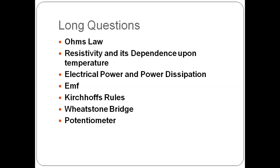In addition, a filament bulb is a non-ohmic device. If it runs for a long time, it becomes warm — the temperature is not constant, it is increasing — so resistance increases. And if resistance is increasing, potential difference and current are not proportional, which is why it is non-ohmic.